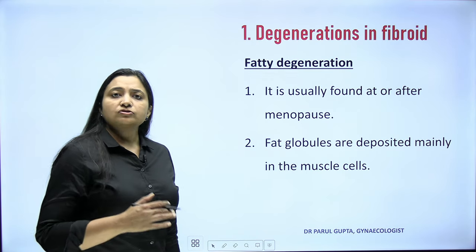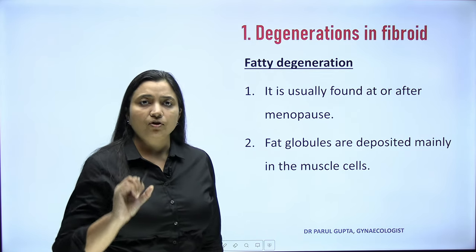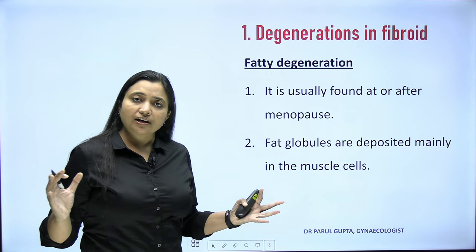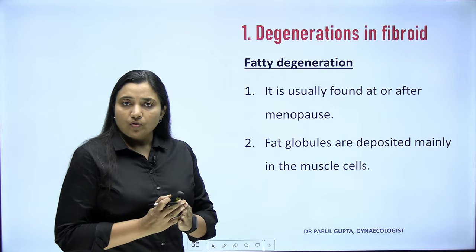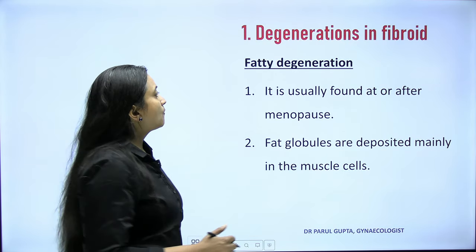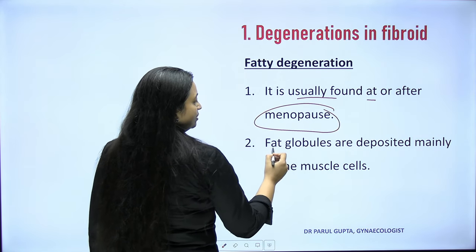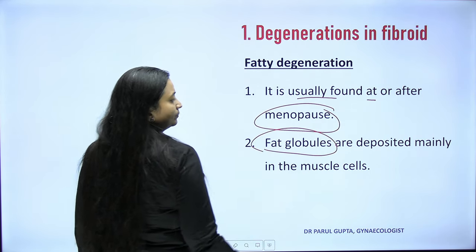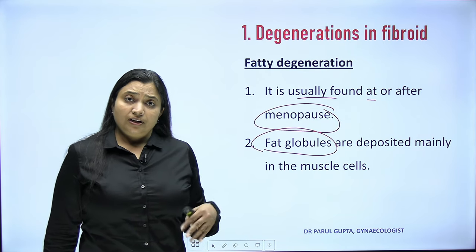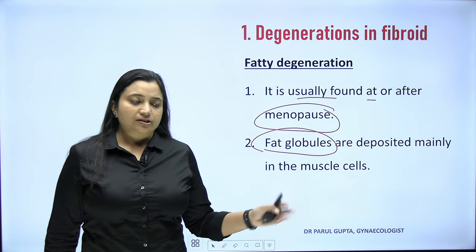Most degenerations except red and hyaline are found in menopause, because fibroids flourish in an estrogenic environment and once there is menopause there are no hormones, so degenerative changes start. Fatty degeneration is usually found at or after menopause. Fat globules are deposited mainly in the muscle cells — the muscle cells start degenerating and are replaced by fat globules, hence called fatty degeneration.